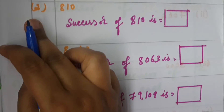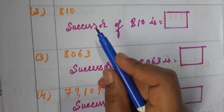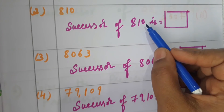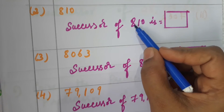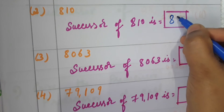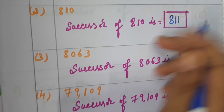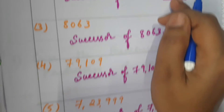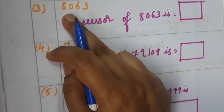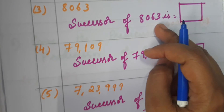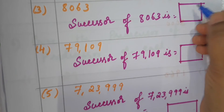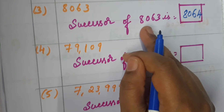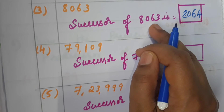Second: we have to write the successor of eight hundred and ten. Successor means next number or after number. After eight hundred and ten is eight hundred and eleven — eight hundred and ten plus one is eight hundred and eleven. Third: the successor of eight thousand and sixty-three is eight thousand and sixty-four — the next number after this.